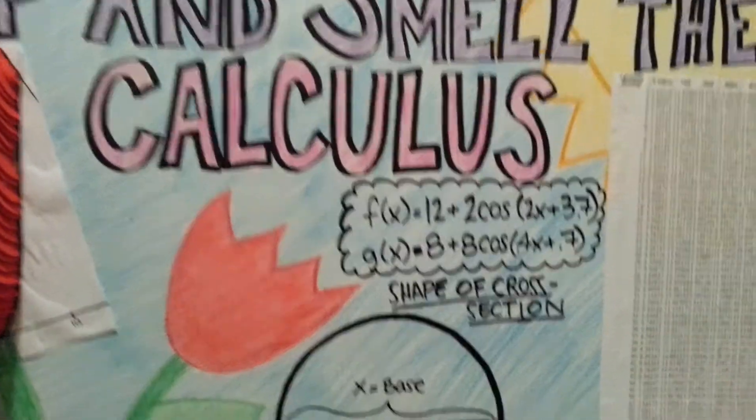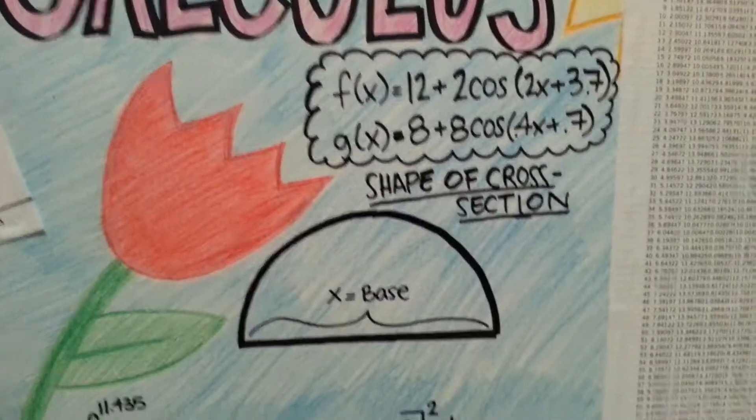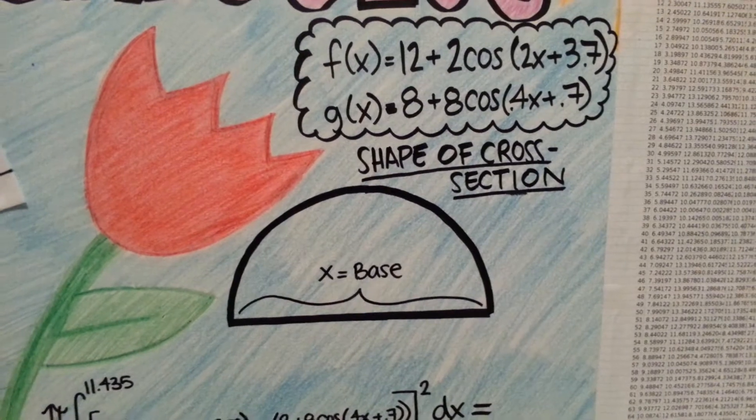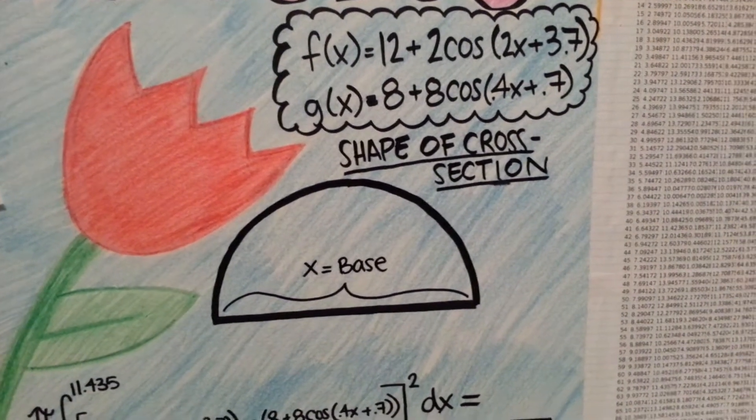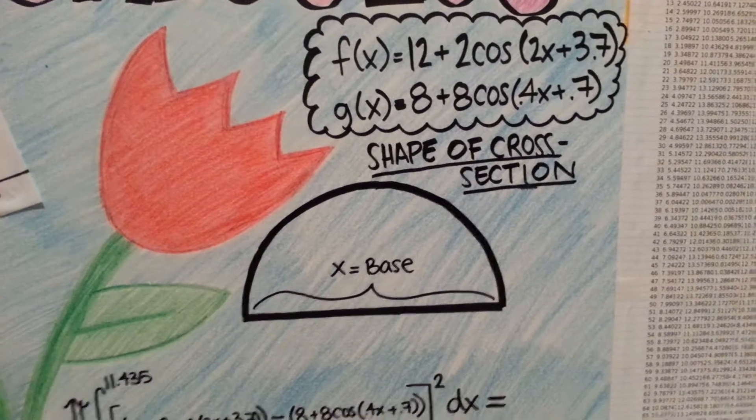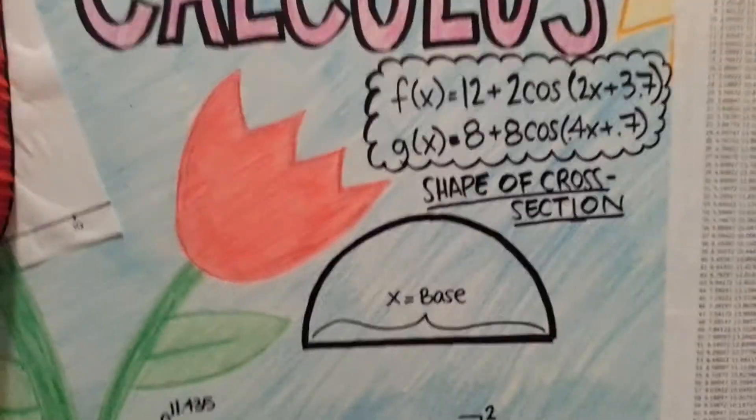The shape that I had to complete my cross-section was a semicircle, which was pretty simple because x equaled my base, which was the same as the diameter. So I could just go from there and build my semicircles.